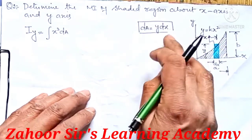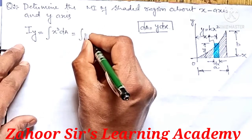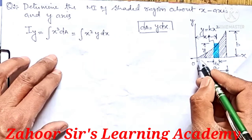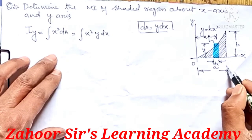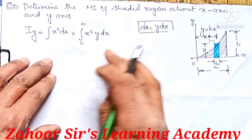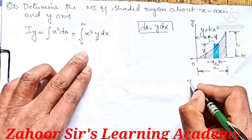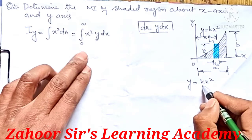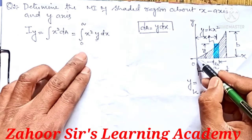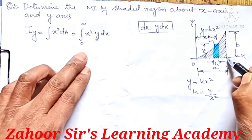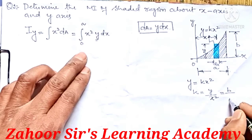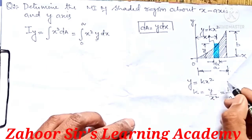We substitute dA into the integral: Iy = ∫x² · y dx, with limits from 0 to a. Now we need to remove y. From the curve equation y = kx², we find k = y/x². Here y goes from 0 to b, and the maximum value of x is a, so k = b/a².